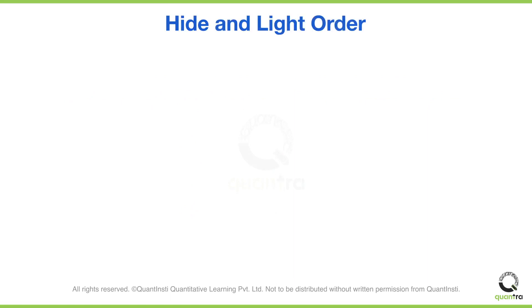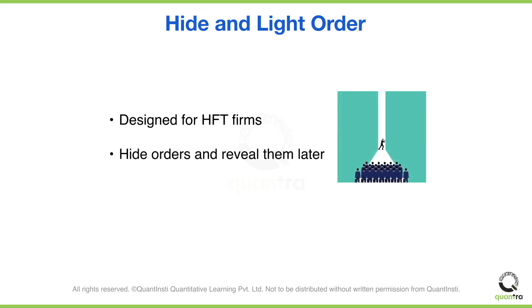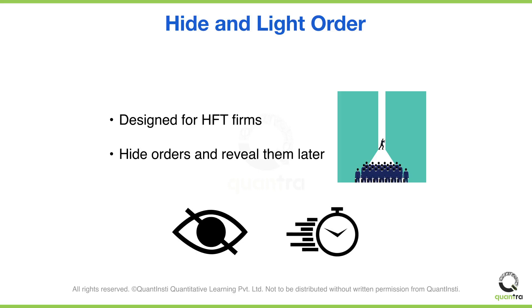The third type of order is the hide and light order, which is designed for HFT firms and is not intended to be a defensive weapon for us. It allows HFT firms to hide their orders from other market participants and only reveal them when it's advantageous. This order type is used by HFTs so that they can avoid revealing their trading strategies and reduce the time lag at the time of execution.